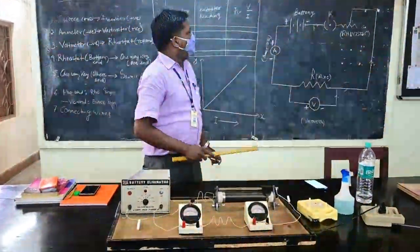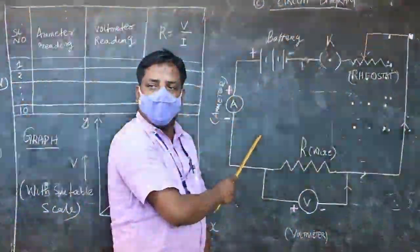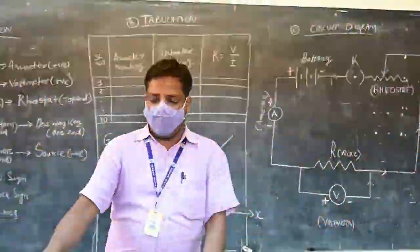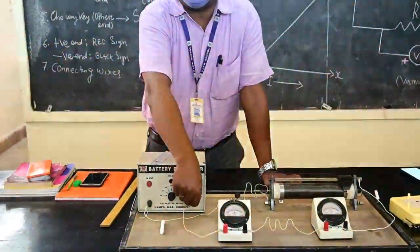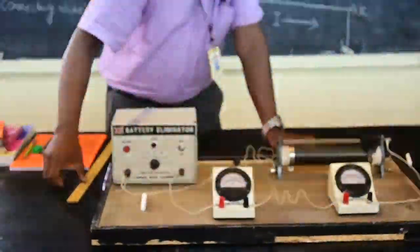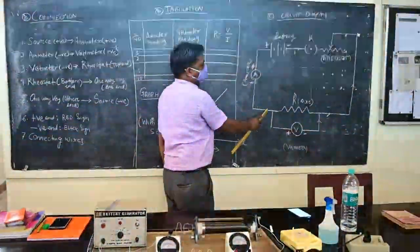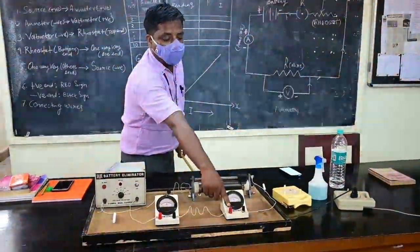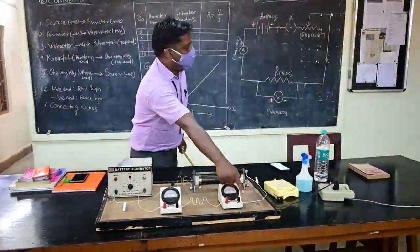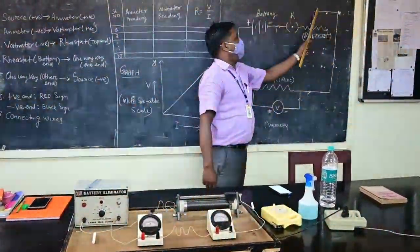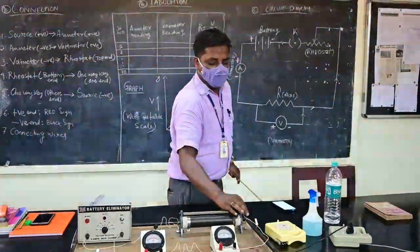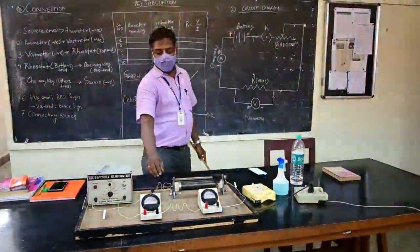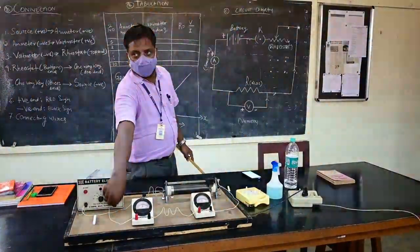Looking at the circuit diagram — which is also in your textbook — the battery positive end is connected to the ammeter positive. Then the ammeter negative is connected to the voltmeter positive as well as the wire under test in parallel. The voltmeter negative is connected to the rheostat. The other part of the rheostat is connected to the key and then to the negative of the source. This completes the circuit.